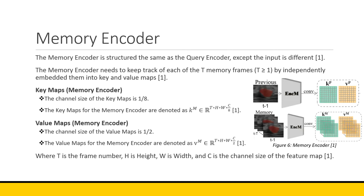The memory encoder is structured the same as the query encoder, except it takes different input. The memory encoder keeps track of a set of frames — think of it as a buffer where you store past frames to use when producing future masks. It independently embeds those frames into key and value maps. The key and value maps for the memory encoder are slightly different, primarily because they incorporate a frame number or T value. The diagram shows two uses of the memory encoder: for the previous frame and for all past frames. Information from the previous frame goes to the spatial encoder, while information from all past frames goes to the temporal encoder.